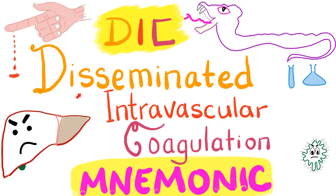Hey guys, it's Medicosis Perfectionist, where medicine makes perfect sense. We continue our bleeding and coagulation playlist. In the previous video, we talked about DIC. Today, we have a mnemonic about disseminated intravascular coagulation. Let's get started.